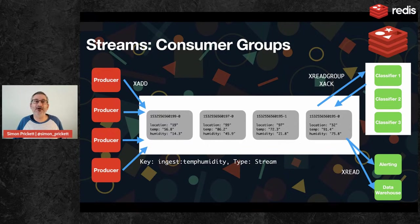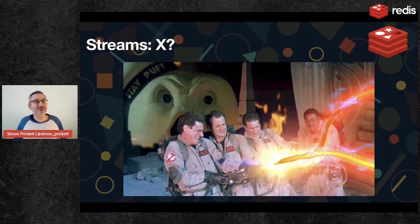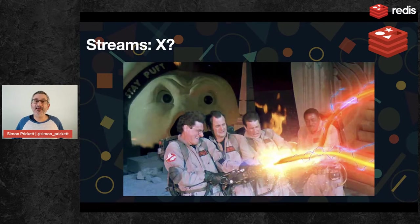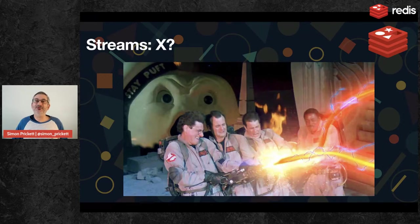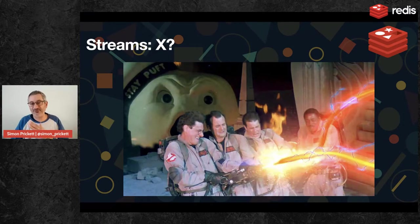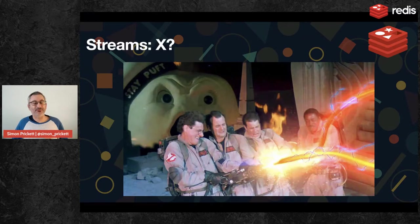Before we do a quick demo — I said all of the commands begin with X. Streams were added to Redis when Salvatore Sanfilippo was developing Redis. He put them in at Redis 5, and it wouldn't surprise me if he chose X for all of the stream commands because if you've ever seen Ghostbusters, they were not to cross the streams. So possibly a little in-joke that you're not supposed to cross the streams — hence the title of today's session.